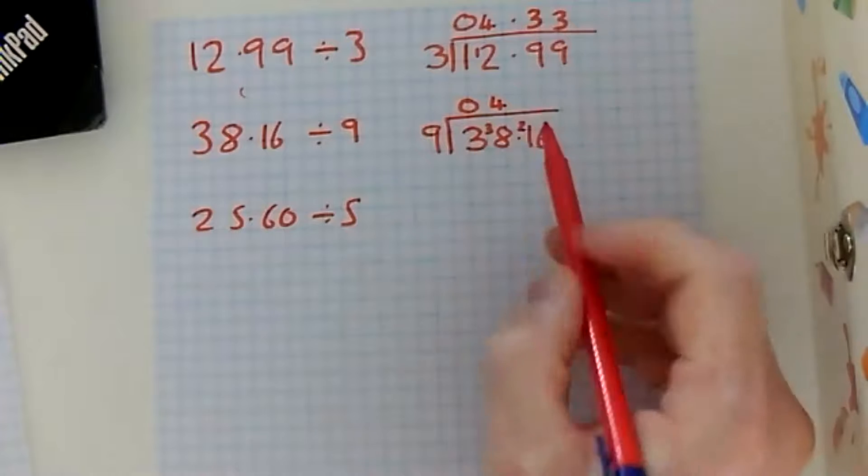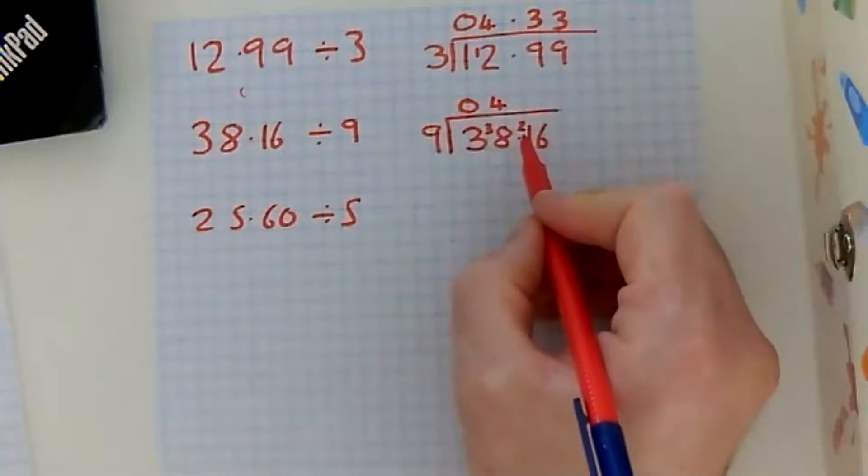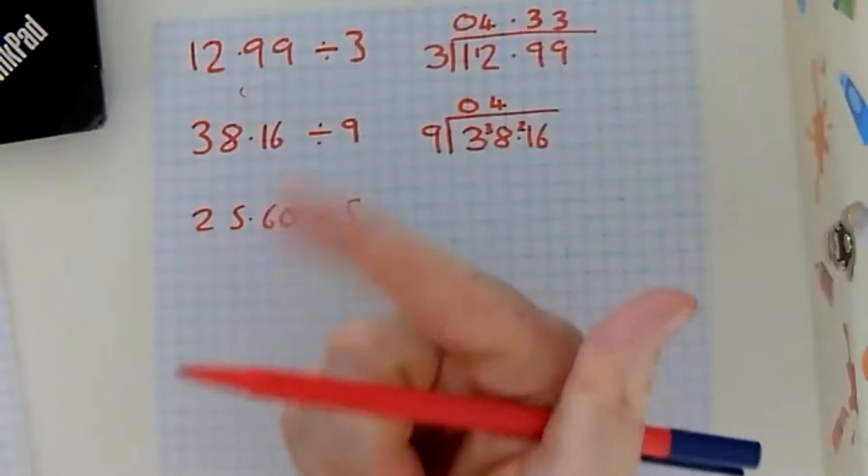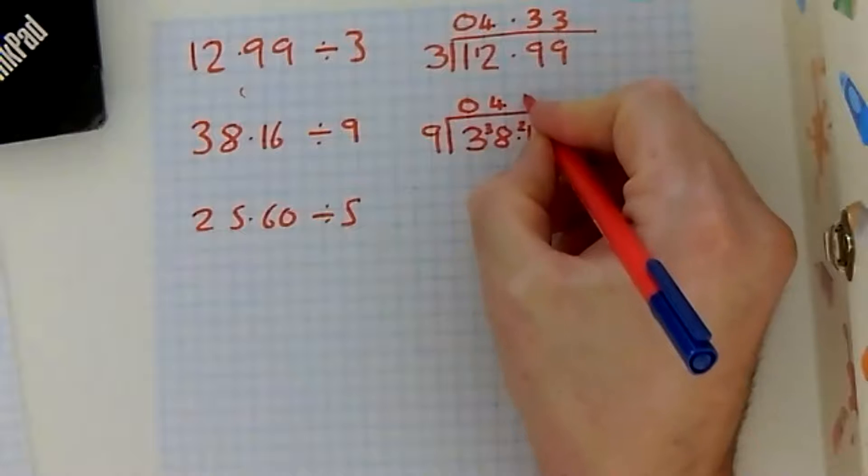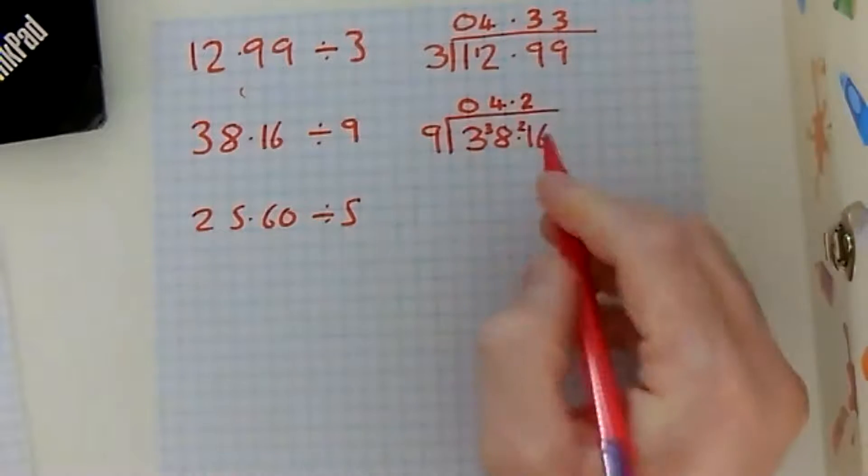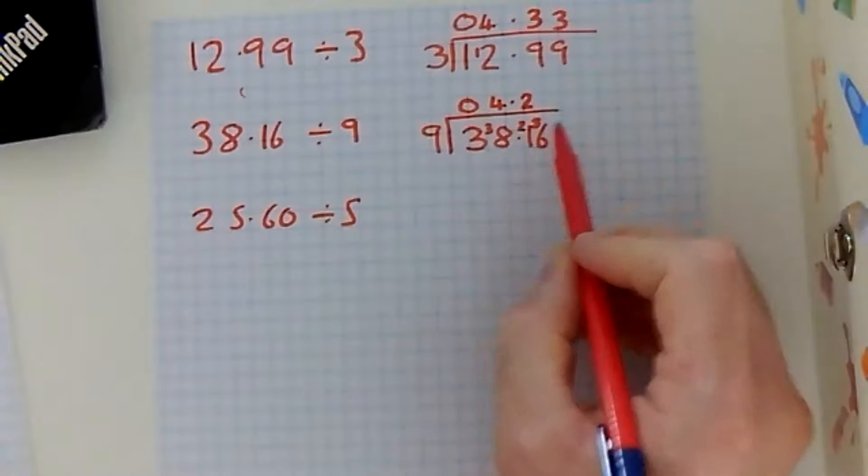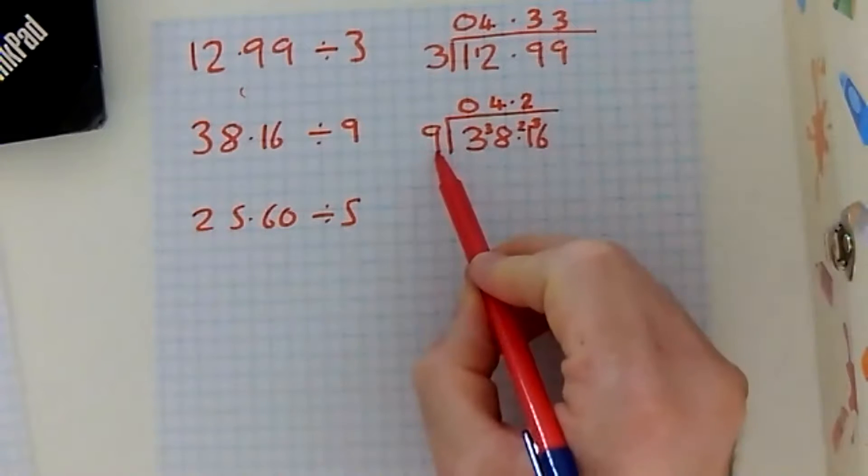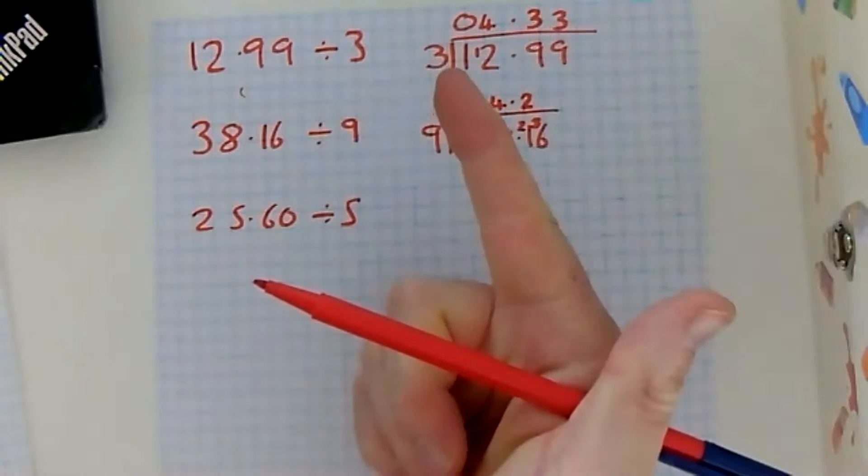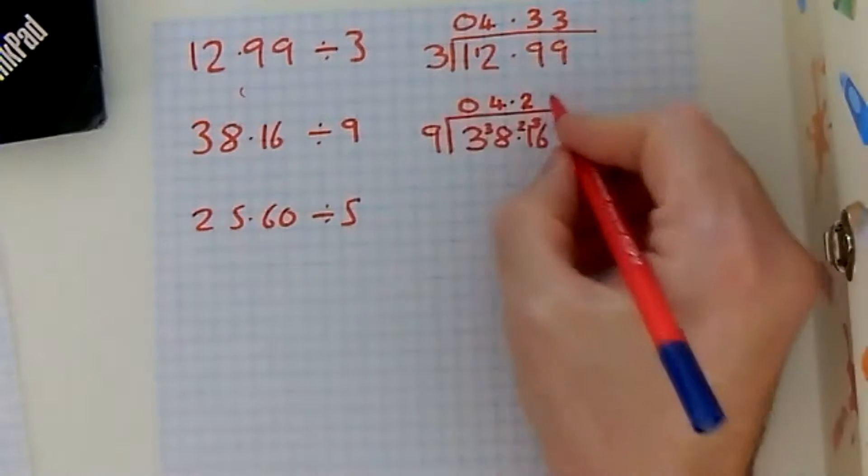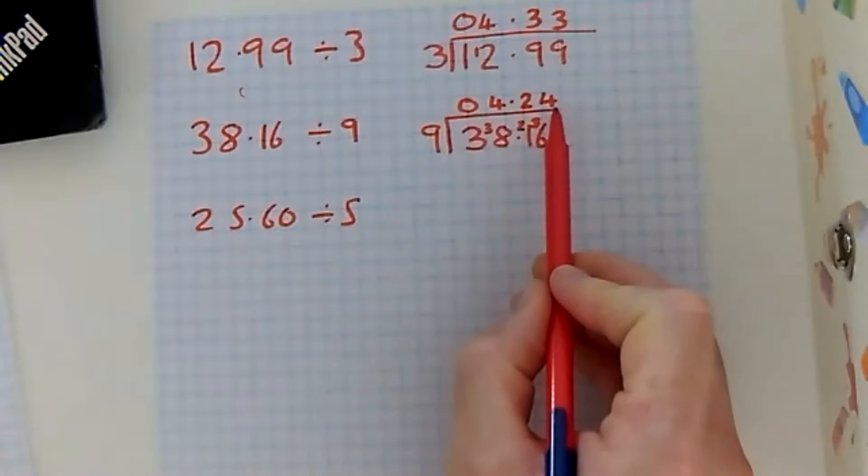I'm now looking at 21 divided by nine. So nine, 18, 27. No, 27 is too big. So it's two. So 18, I've got three left over. I exchange that across. So I'm now dividing 36 by nine, which is four. Let's just check. Nine, 18, 27, 36. So each in Deal B is four pounds and 24 pence.